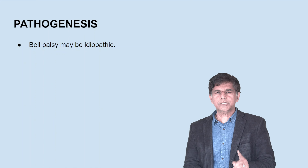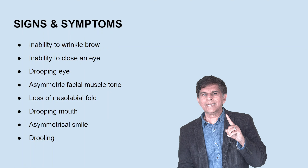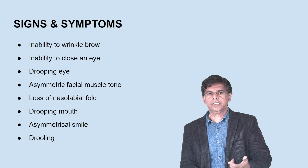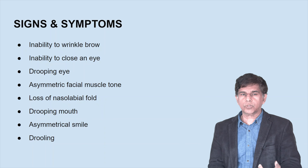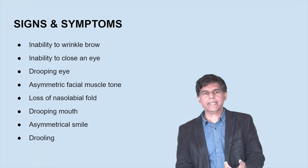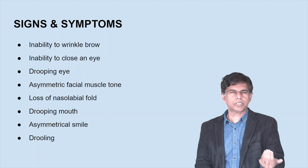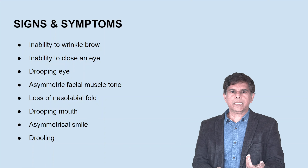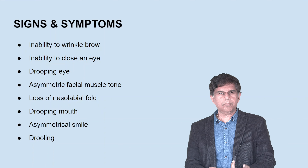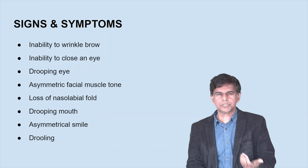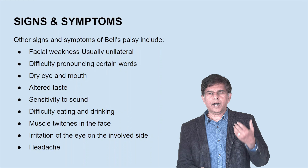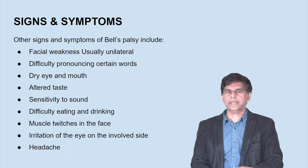Signs and symptoms: patients usually present with inability to wrinkle the brow, inability to close an eye, drooping of the eye, asymmetric facial muscle tone, loss of nasolabial fold, drooping of the mouth, and asymmetric smile — those are the things someone usually recognizes. Other signs and symptoms include facial weakness (usually unilateral), difficulty pronouncing certain words, dry eye and mouth, altered taste, drooling, sensitivity to sound, difficulty eating and drinking, muscle twitches on the face, irritation of the eye on the involved side, and headache.